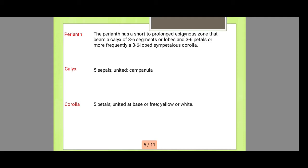There are five sepals and five petals, and they are united. The calyx has five sepals, the corolla has five petals. Petals are united at the base or free, mostly yellow or white in color.